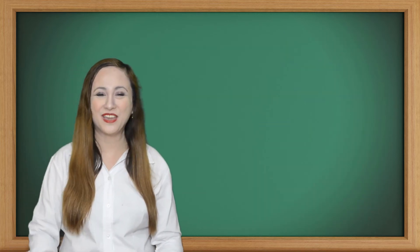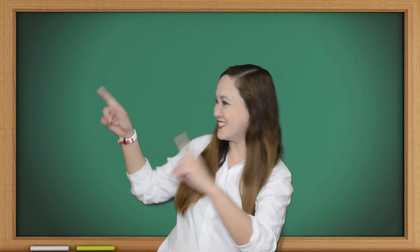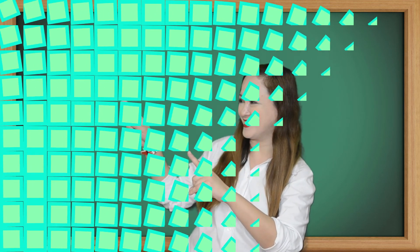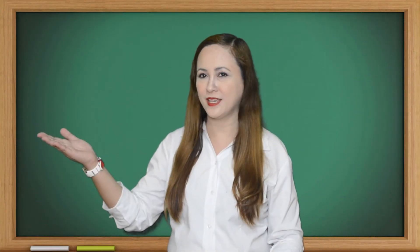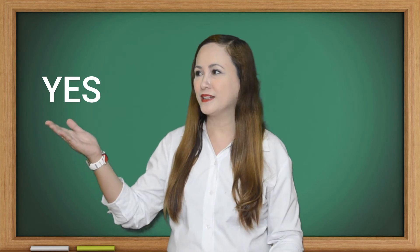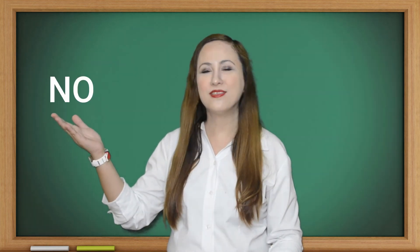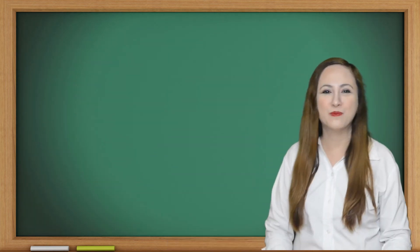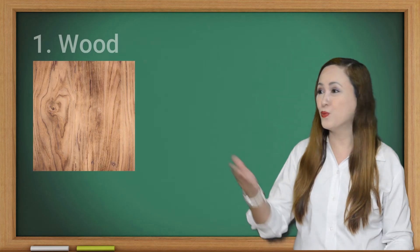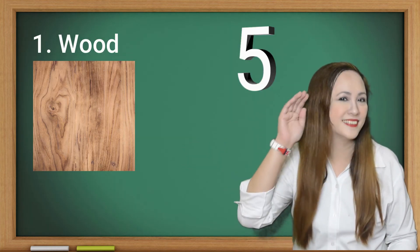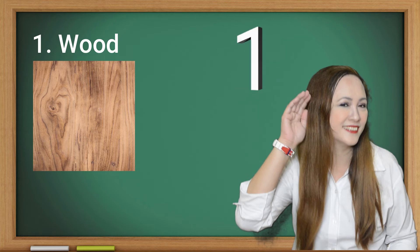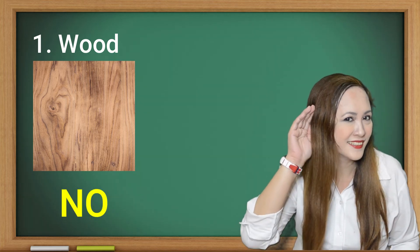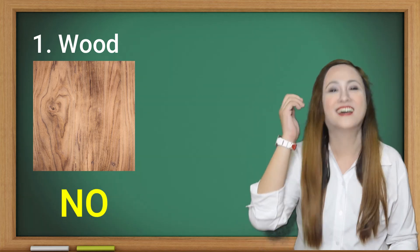Let's see if you learned something. Choose which of the following are magnetic — say yes if magnetic, and no if it is not. Number one: wood. Correct!